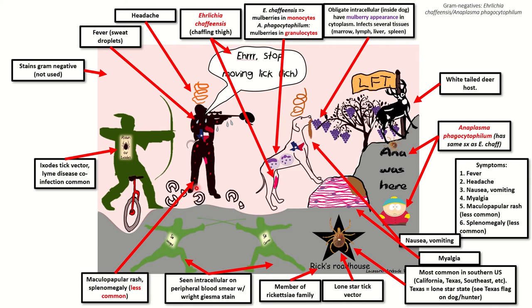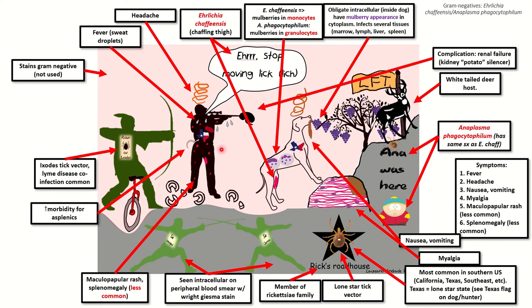It also can cause splenomegaly. The rash is represented by the red dots and the big spleen here for splenomegaly. There is an increase in morbidity or disease severity for asplenic patients, such as sickle cell patients, represented here with a sickle. It can be complicated by renal failure — represented by this kidney potato silencer on the gun of this hunter here — and this scenery reminds you that it is a tick-borne illness, so outdoorsy people with myalgias are what you want to think about for potential infection.